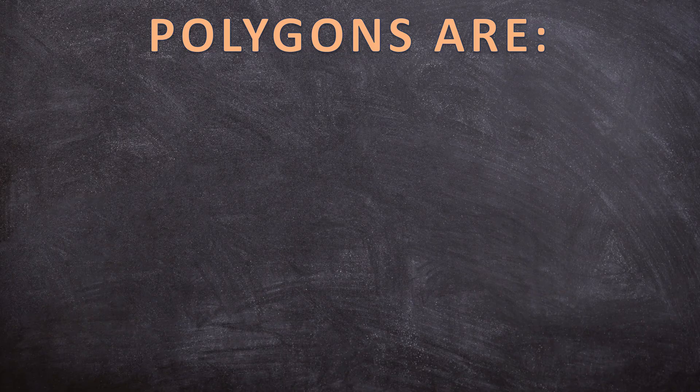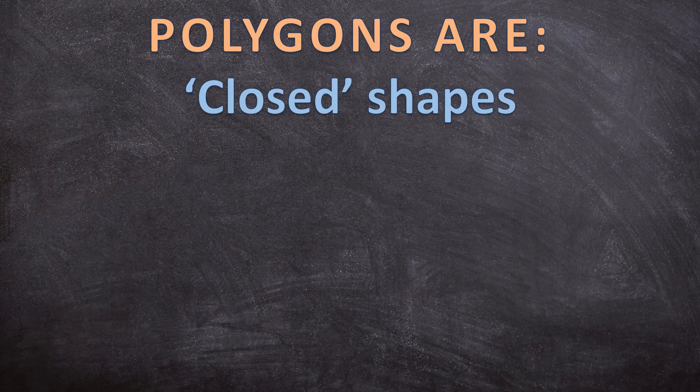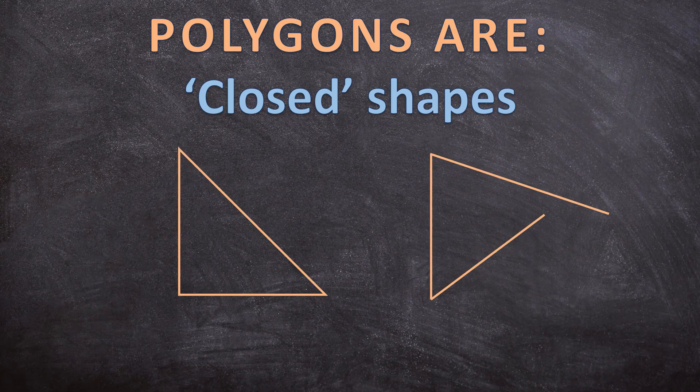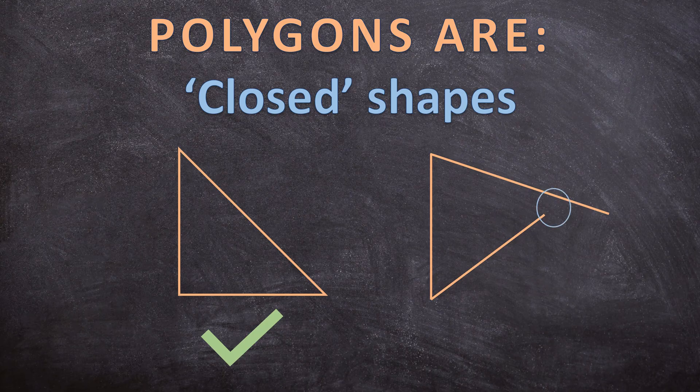For the third characteristic, polygons are closed shapes. Let's look at these two shapes. Both of them are flat and both of them only consist out of straight lines. But the triangle on the left is a closed shape, where the shape on the right hand side is not closed — it has an opening. So this is not a polygon.